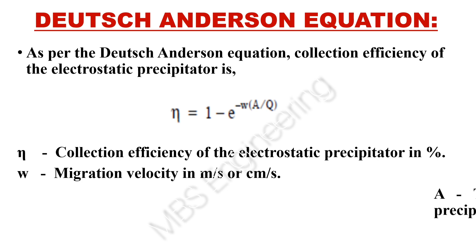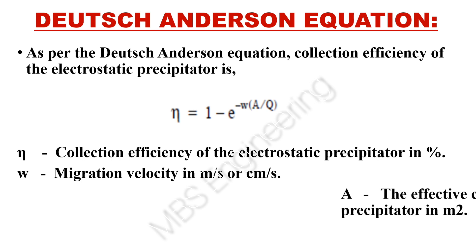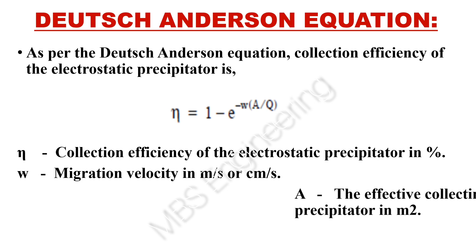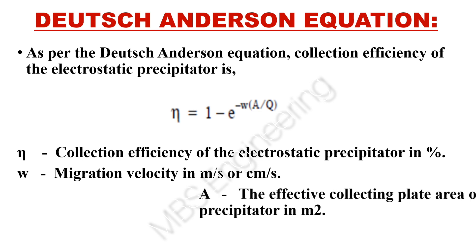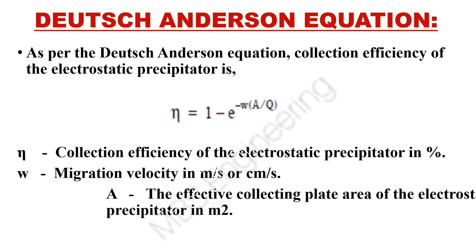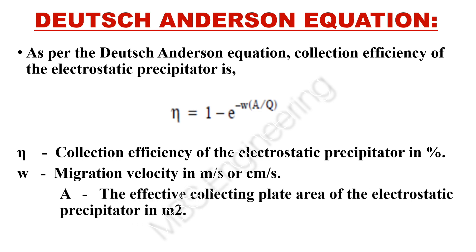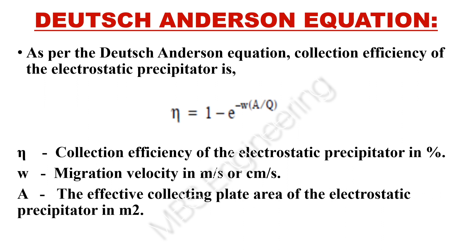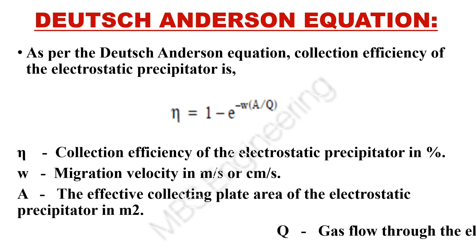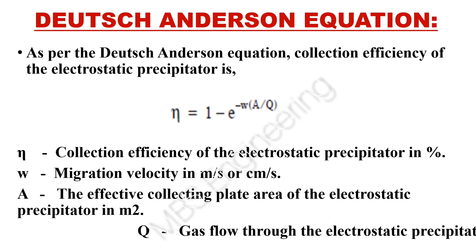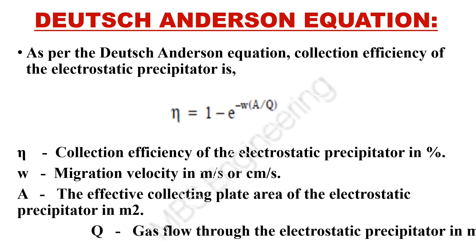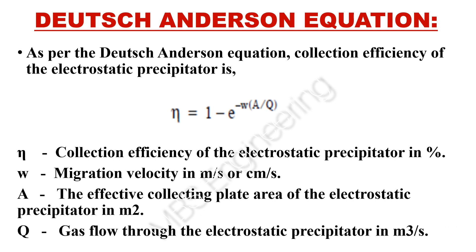Where: eta is the collection efficiency of the electrostatic precipitator in percentage; omega is the migration velocity in meters per second or centimeters per second; A is the effective collecting plate area of the electrostatic precipitator in square meters; and Q is the gas flow through the electrostatic precipitator in cubic meters per second.